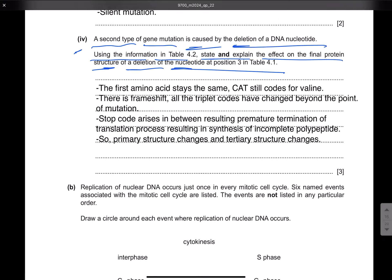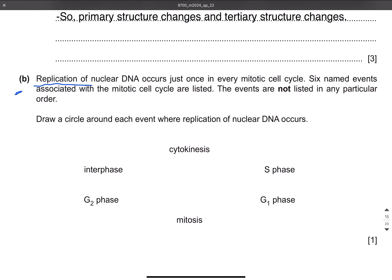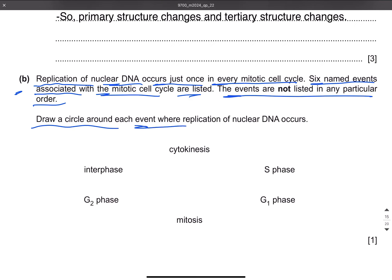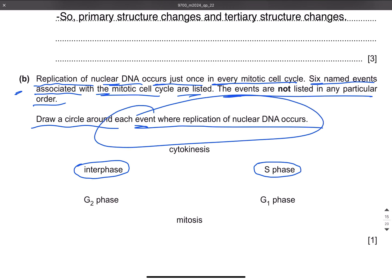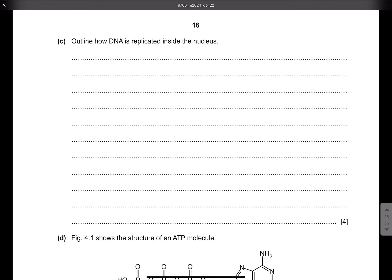Let's move on to part B. Replication of nuclear DNA occurs just once in every mitotic cell cycle. Six named events associated with the mitotic cell cycle are listed — the events are not listed in any particular order. Draw a circle around each event where replication of nuclear DNA occurs. DNA replication occurs during S phase, and S phase is part of interphase, so you have to circle S phase and interphase.